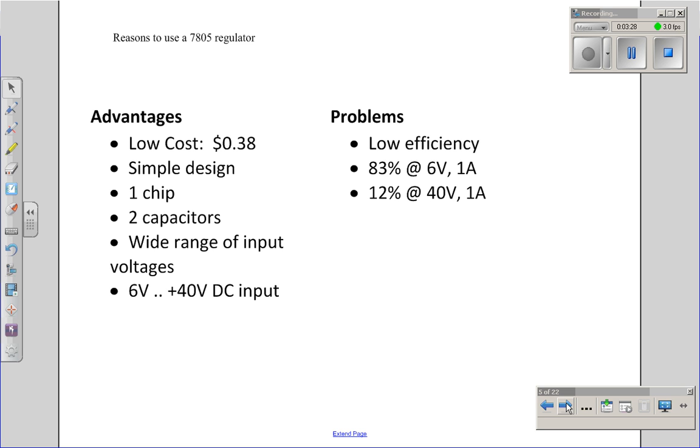The disadvantage is the efficiency. If I keep my power supply down around 6 volts, they're about 83 percent efficient. Essentially, 5 out of 6 volts goes to the load. If I have a 40 volt power supply, only 5 out of 40 volts goes to the load. The rest is being dumped by the transistor.